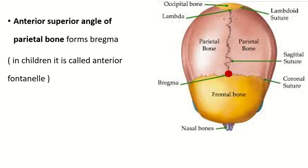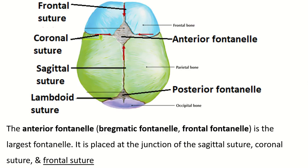The antero-superior angle of the parietal bone — in adults this part is known as the bregma, and in children this is known as the anterior fontanelle. The anterior fontanelle is situated in between the frontal suture, coronal suture, and sagittal suture.